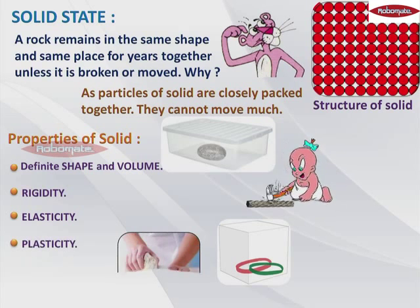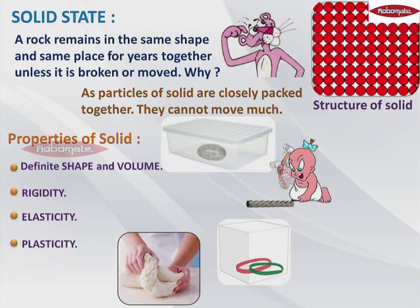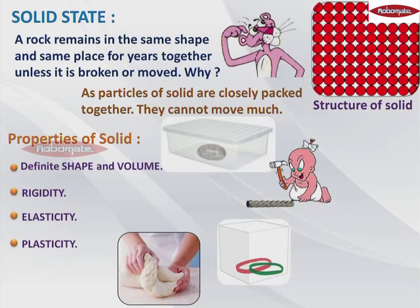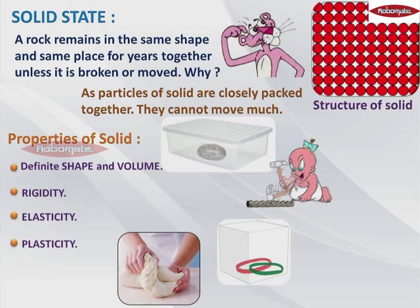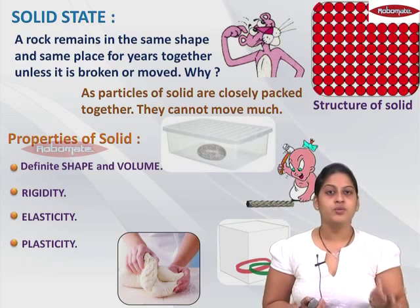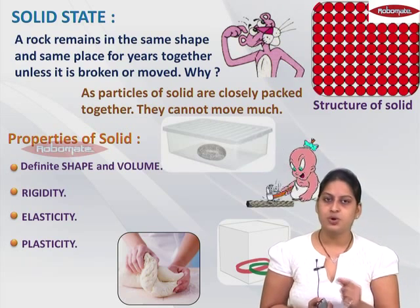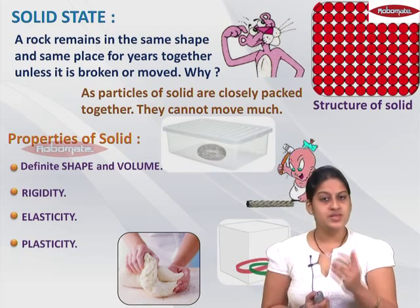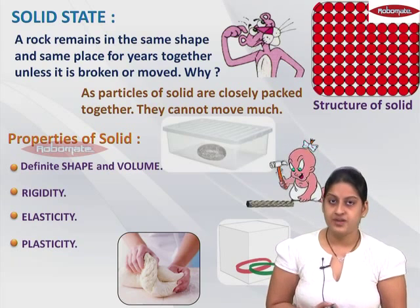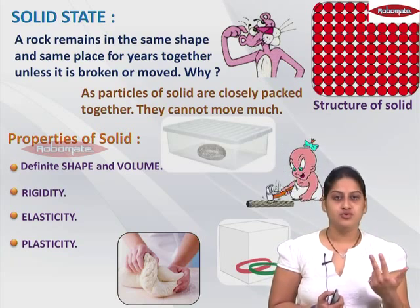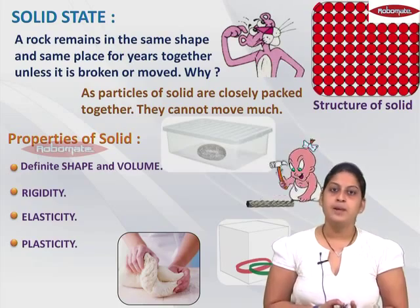There is one more property of solids known as plasticity. Some solids do change their shape when external pressure is applied, but when you remove the external pressure, they do not regain their original shape — this property is known as plasticity. A very good example is dough and clay. When you put pressure on clay, it does change its shape, but when you remove your hand, it does not go back to its original shape. So we have listed the properties of solids: definite shape and definite volume, rigidity, elasticity, and plasticity.